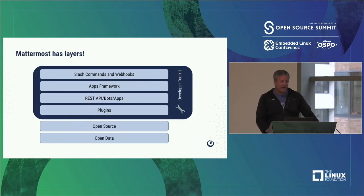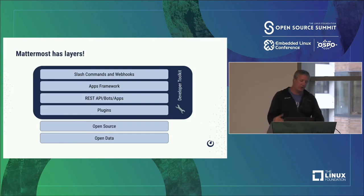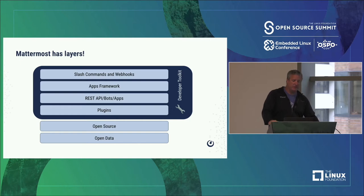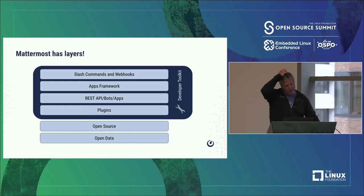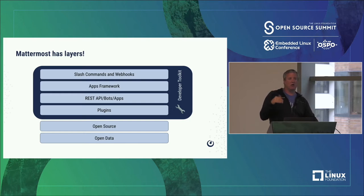So what does that look like in Mattermost? We'll go through all these different layers. We'll start with the two bottom ones — open source and open data — then jump into what we call the developer toolkit. The developer toolkit has a whole bunch of layers that kind of start from easy to hard, and I'll show examples of what you can do with these things.